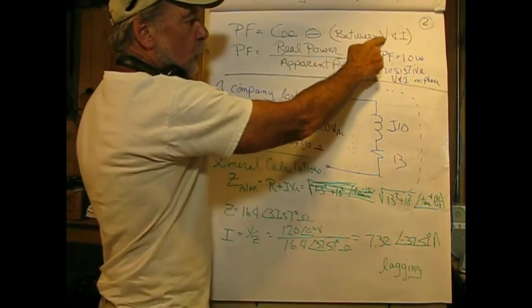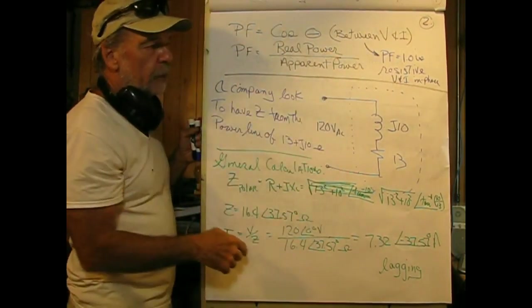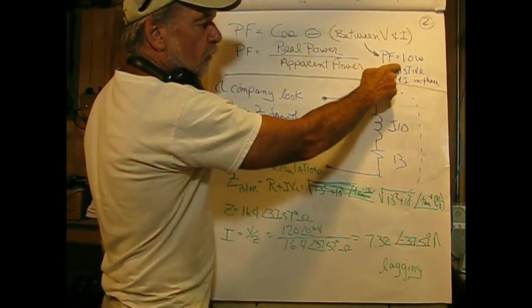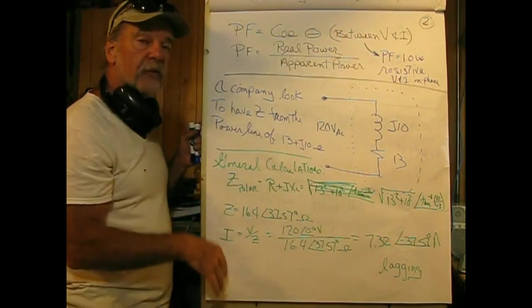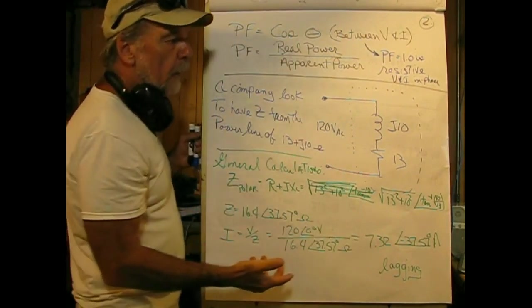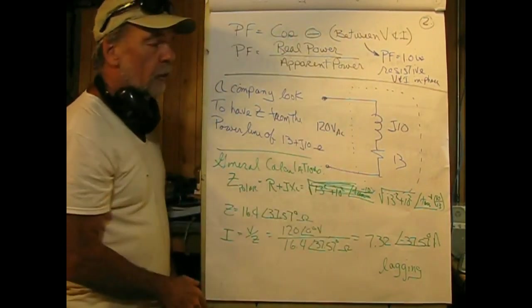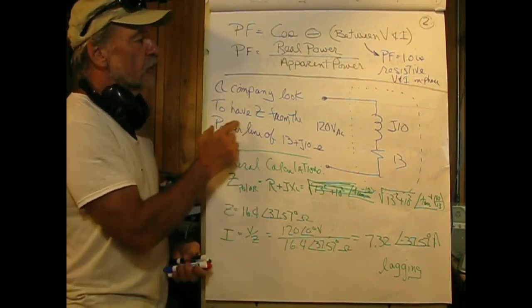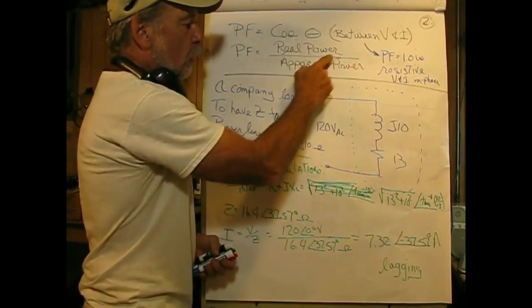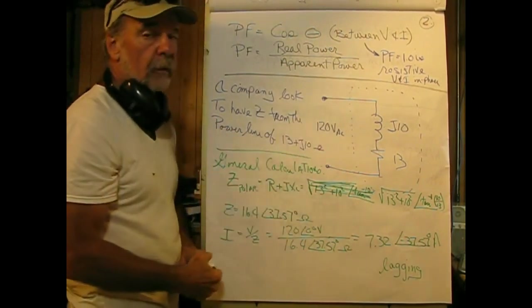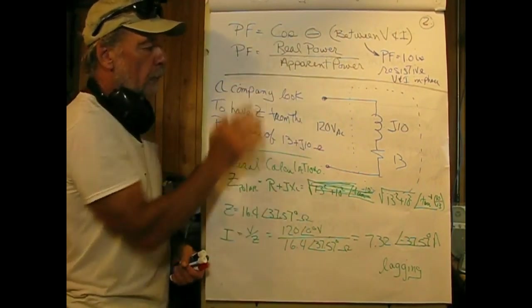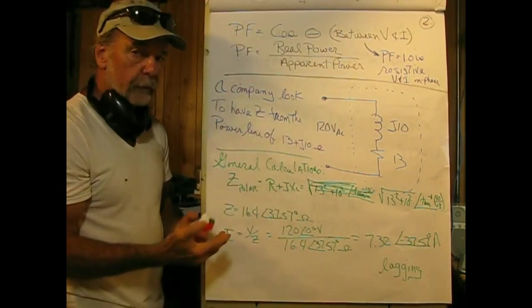The relationship between the phase of the current and voltage is called the power factor. Power factor equals the cosine of the angle between voltage and current. When PF equals 1.0, it's a resistive circuit where voltage and current are exactly in phase. Second definition of power factor is the real power divided by the apparent power.